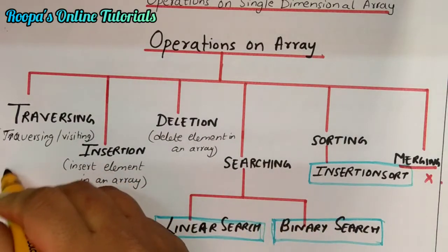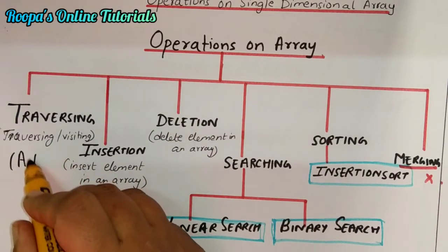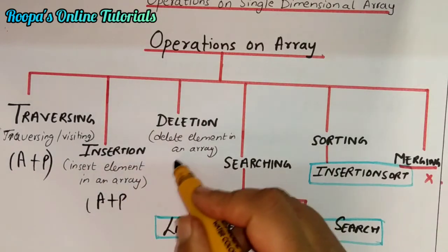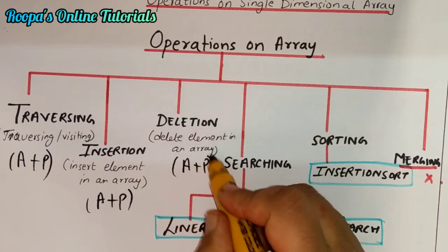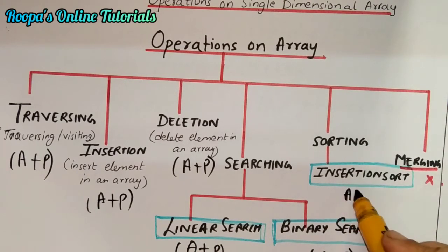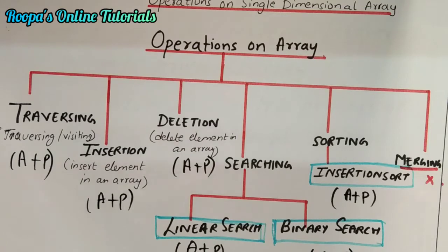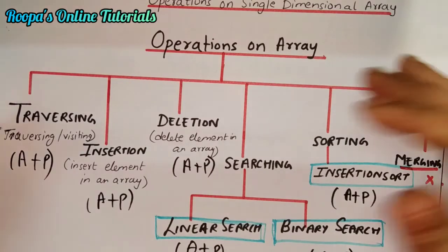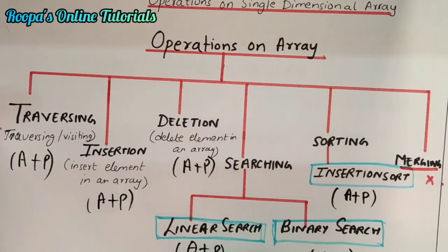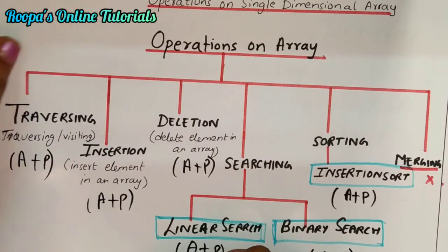Now, coming to traversing — you have to learn both the algorithm and the program. For insertion also, you have to learn the algorithm and the program. Deletion also has algorithm and program. Linear search, binary search, and insertion sort also each have an algorithm and program. So there are around six algorithms and programs that you have to be well prepared for the exam. At least two algorithms are asked — either two algorithms for five marks, and one for three marks. So this chapter is quite important.